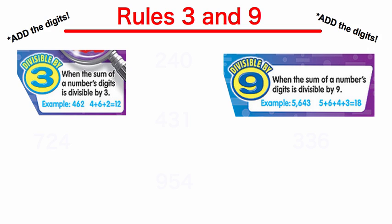Now the rules for 3 and 9 — we put them together because they have a similar rule. We're going to be adding the digits of numbers. For divisibility by 3, when the sum of a number's digits is divisible by 3. For example, 462: add all the digits — 4 plus 6 plus 2 equals 12. Can 3 evenly go into 12? Yes, 3 goes into 12 four times. Therefore, this whole number is divisible by 3.